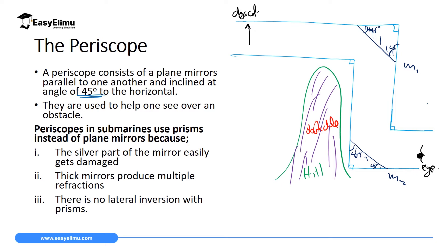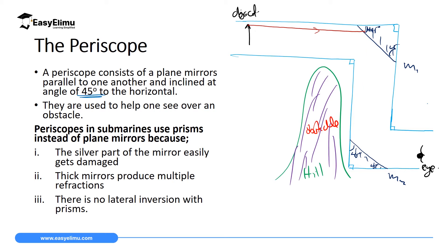If we have a ray from the tip of the object, this ray comes in a straight line to the first mirror. Remember to use a ruler when drawing. When it hits the first mirror, the angle of incidence is 45 degrees and the angle of reflection is also 45 degrees, so it turns by 90 degrees and gets reflected toward the second mirror.